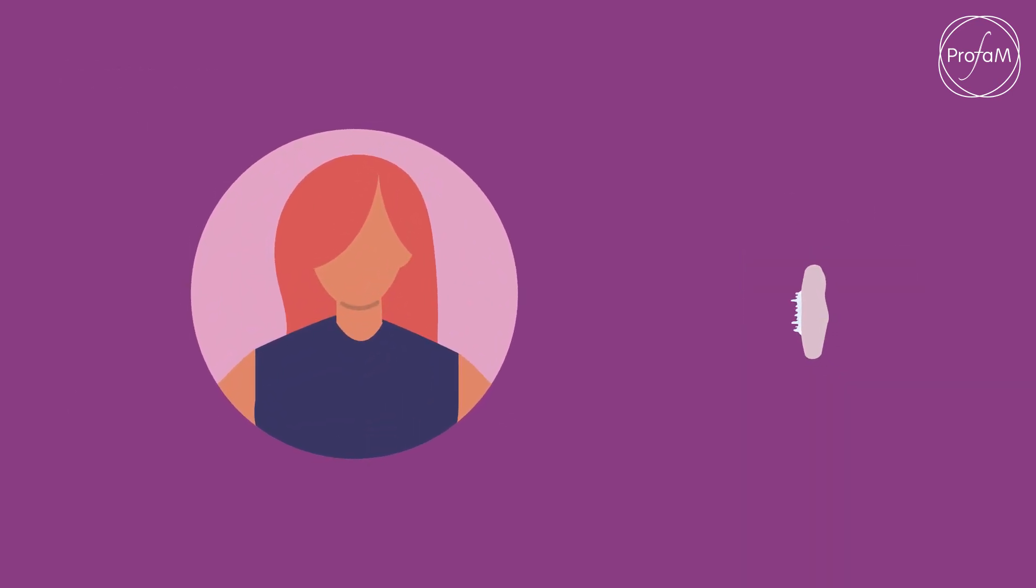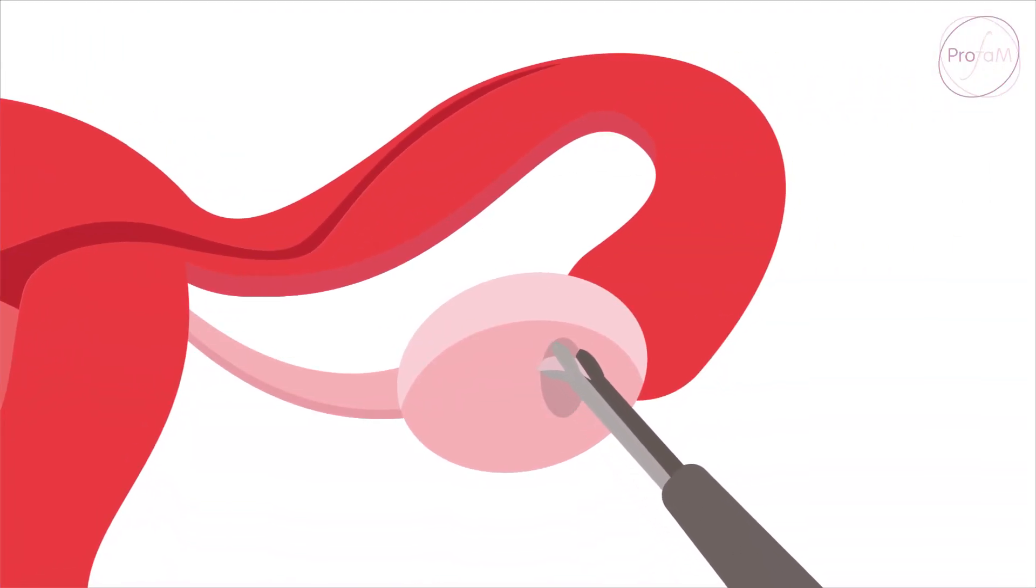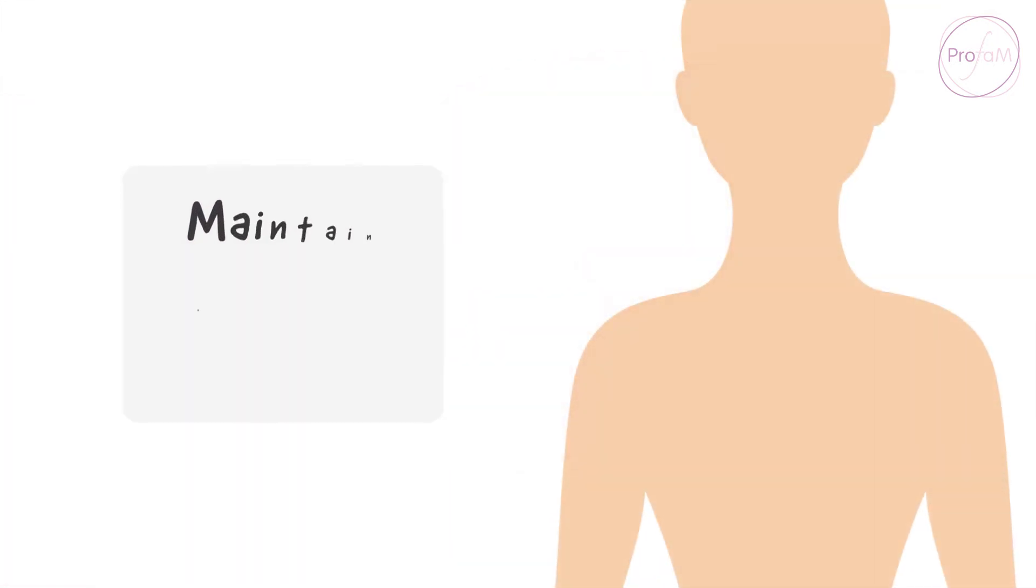Years later, a few tissue strips can be gently thawed and grafted back to the woman. If the woman is trying for a baby, the tissue is grafted near her fallopian tube. If the woman wishes to maintain hormone production,